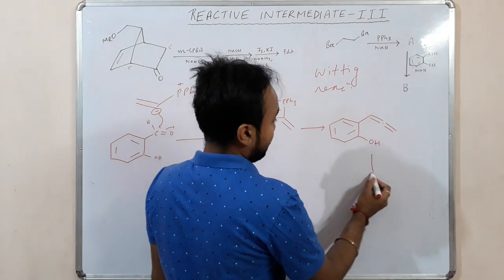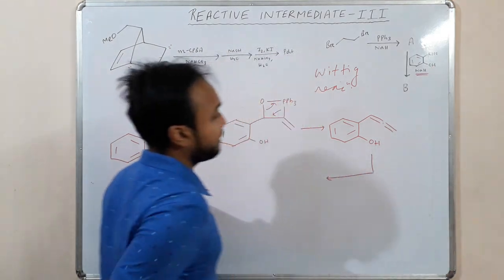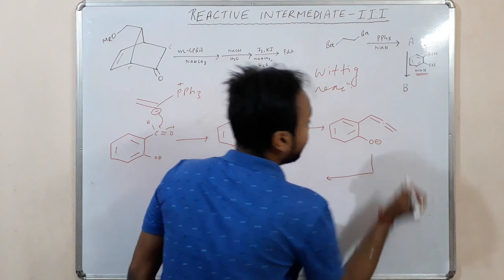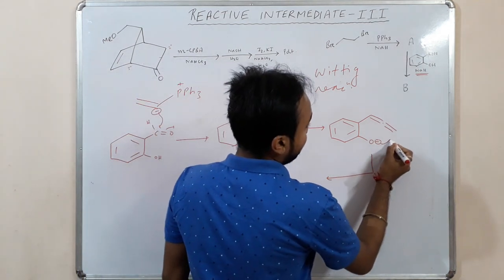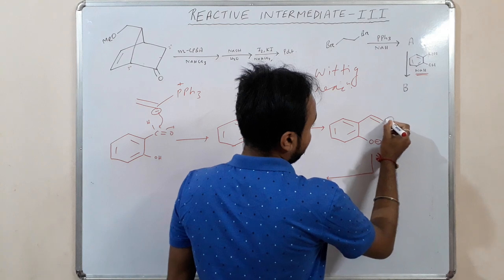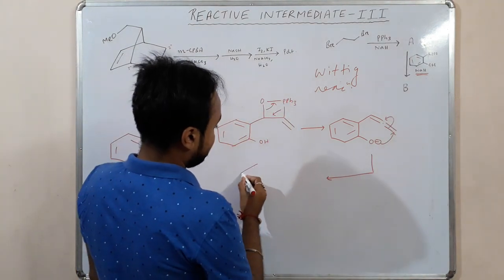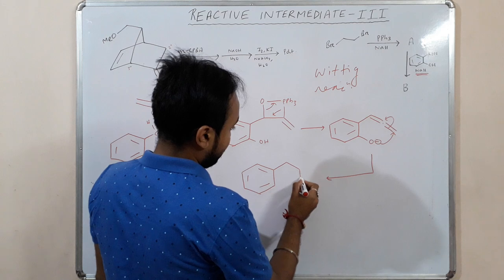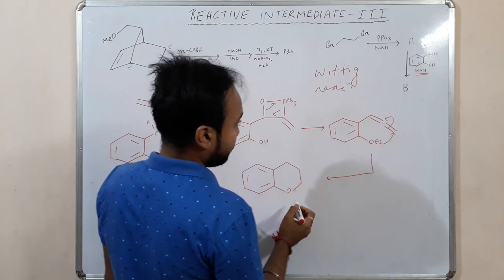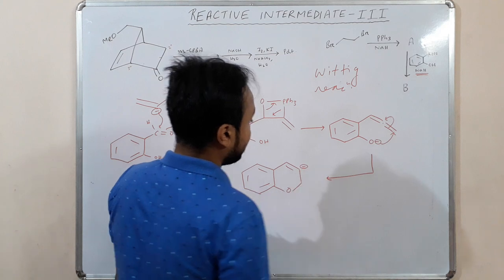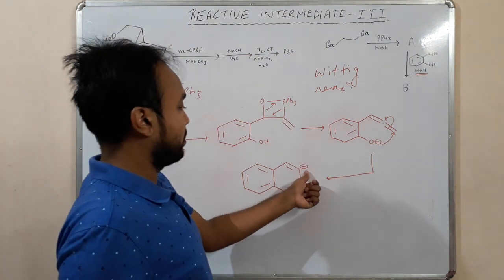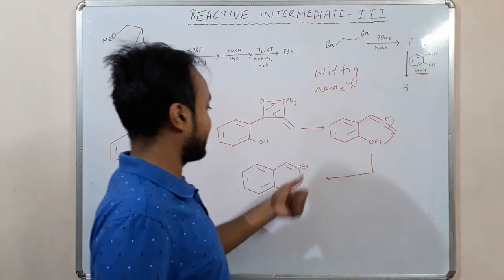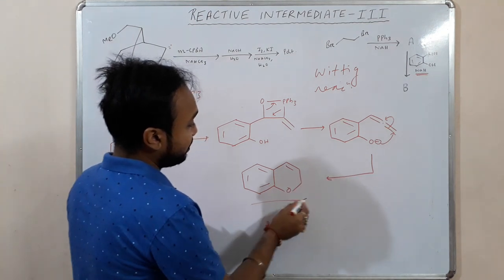Now you have given base. So it will abstract this proton. It will abstract this proton from this OH. Now it will attack this position. What happens - this leads to formation of a six-member ring heterocycle. We have a double bond and this is negative charge. And it will take up the proton from the proton which gets away from this OH group. It will take up that proton and leads to formation of this product.